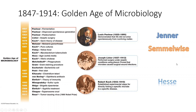Fleming accidentally discovered penicillin. He was studying a bacteria called Staphylococcus aureus and noticed some of his petri dishes were contaminated with fungus. Rather than discarding them, he studied them and noticed a gap of space between the fungus and the bacteria. He hypothesized the fungus was releasing something that prevented the bacteria from growing next to it. He was right — that particular fungus naturally produced penicillin and was killing the bacteria.